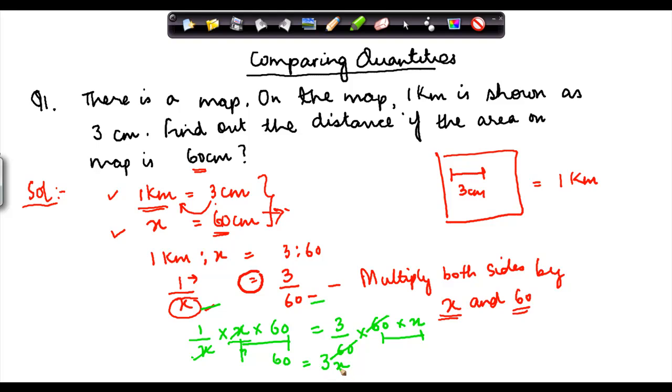So if 3 times x is equal to 60, then what is the value of x? x is equal to 60 divided by 3, or 20. So this value of x is going to be 20 kilometers.